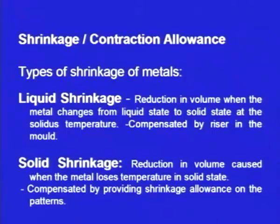Shrinkage allowance is also known as contraction allowance. When we make a casting during solidification, it undergoes shrinkage. If we want a particular size and if we make the pattern exactly as the size of the required casting, during pouring and during solidification the metal solidifies and undergoes shrinkage. And finally, after solidification, the size of the casting will be smaller than the expected size of the casting.